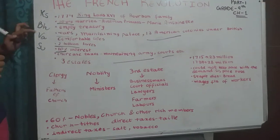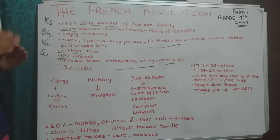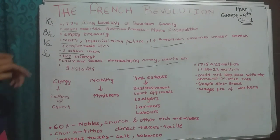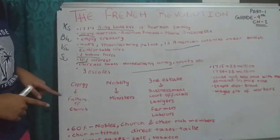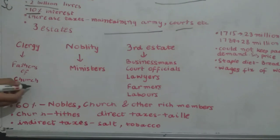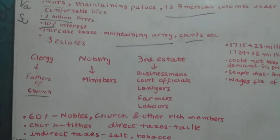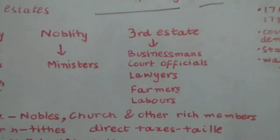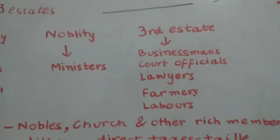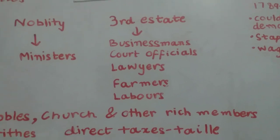Now in France, there were three estates. The First Estate was the clergy — the fathers of the church. The Second Estate was the nobility — ministers and other rich members of society. In the Third Estate, there were businessmen, court officials, lawyers, farmers, and laborers.